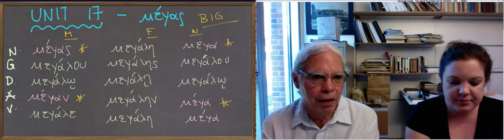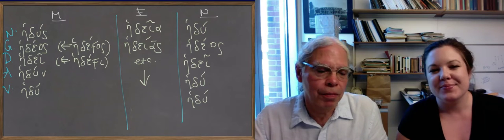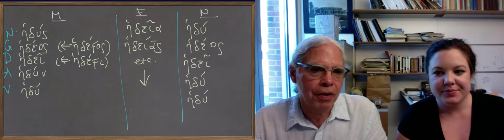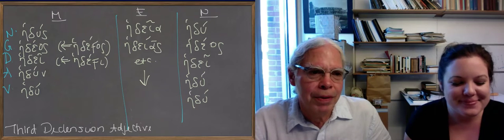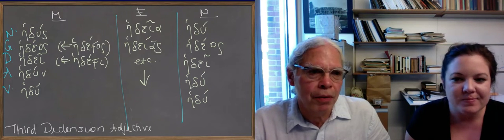Here's the second adjective. So we're talking about the other third declension adjective, hedus, which is really—we're not talking about hedus, the word for sweet. It's actually cognate with the English word sweet.